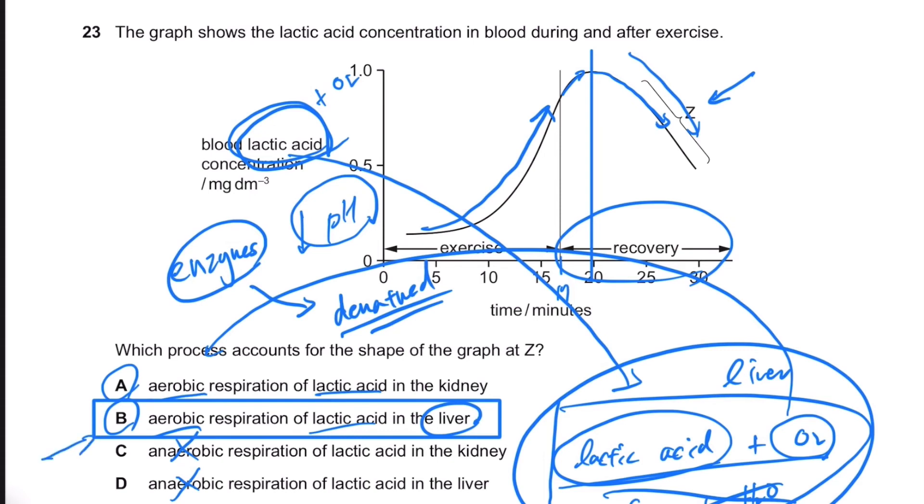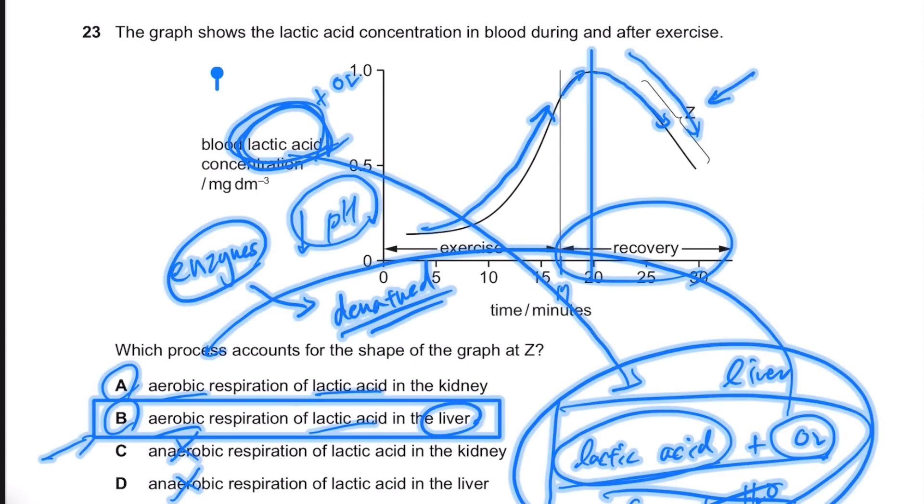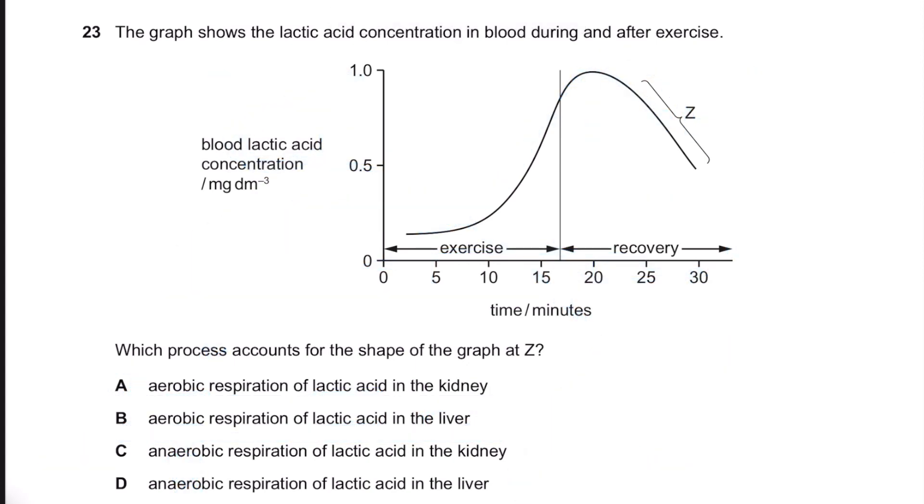Just remember that lactic acid builds up in our body when we go through vigorous exercises. And then in order to get rid of the lactic acid, what we need is a good liver, healthy liver, and oxygen. So the answer is B for this one. Thank you.